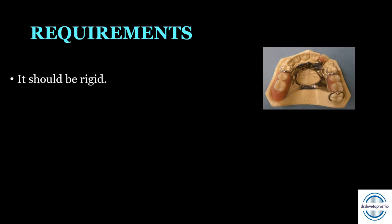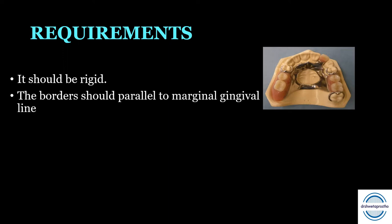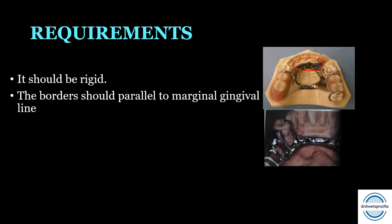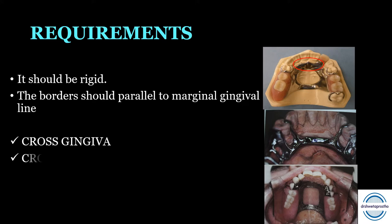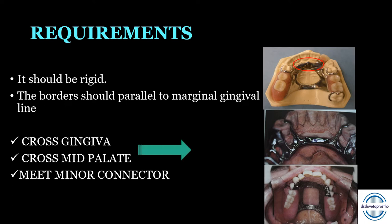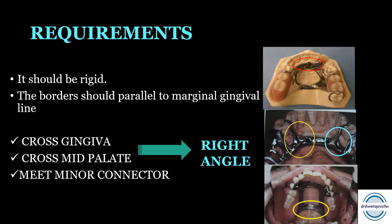Second, the borders of the major connector should be parallel to the marginal gingival line — there should be no crossover or minimal crossover. If the major connector has to cross the free gingiva, it will always cross at a right angle. If it has to cross the mid-palate in the maxillary case, that will also occur at a right angle. And when the major connector meets the minor connector, that also occurs at a right angle. Why? Because crossing at a right angle results in minimal tissue coverage and it will be least noticeable.